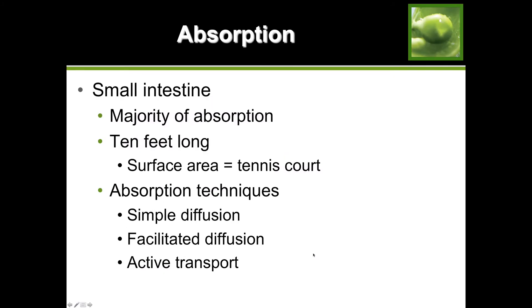Absorption: the majority of your absorption happens in the small intestine. Your small intestine is about 10 feet long - with some people up to 14 feet. The surface area is equivalent to a tennis court. If you took your small intestine and stretched it completely out, it would be the size of a tennis court.